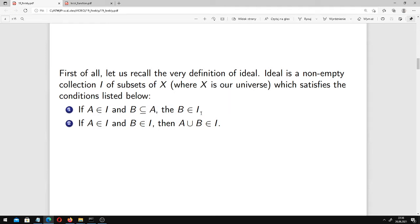If we know that certain set A is in our ideal, and another set B is contained in A, then B is also in our ideal. So there is a kind of heredity. And if we have two sets which are in the ideal, then their union belongs to the ideal too.